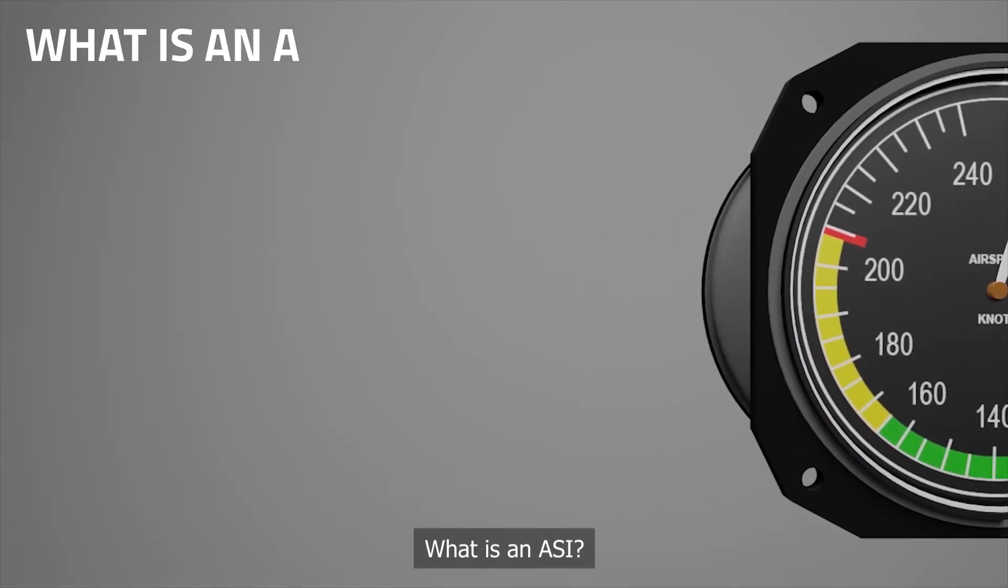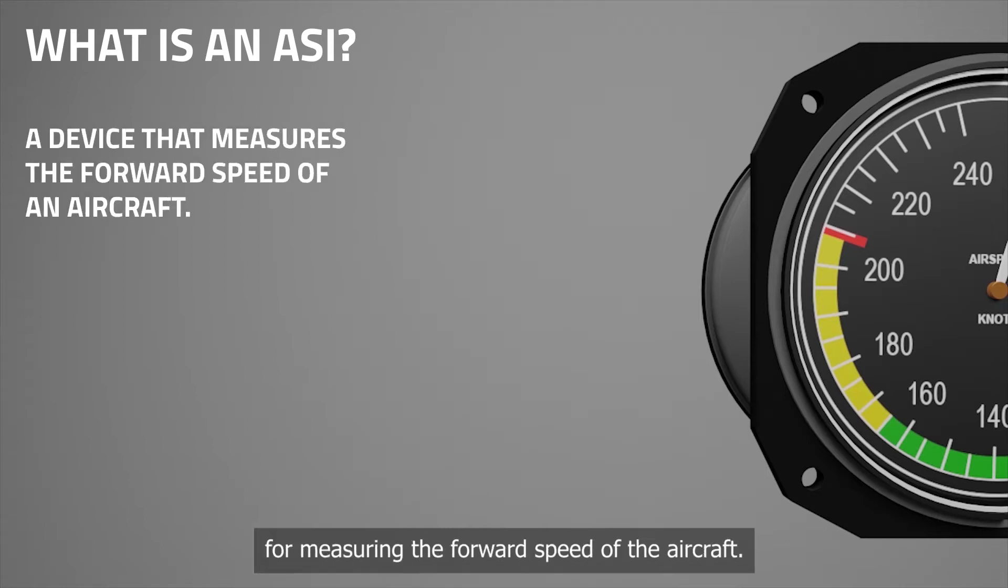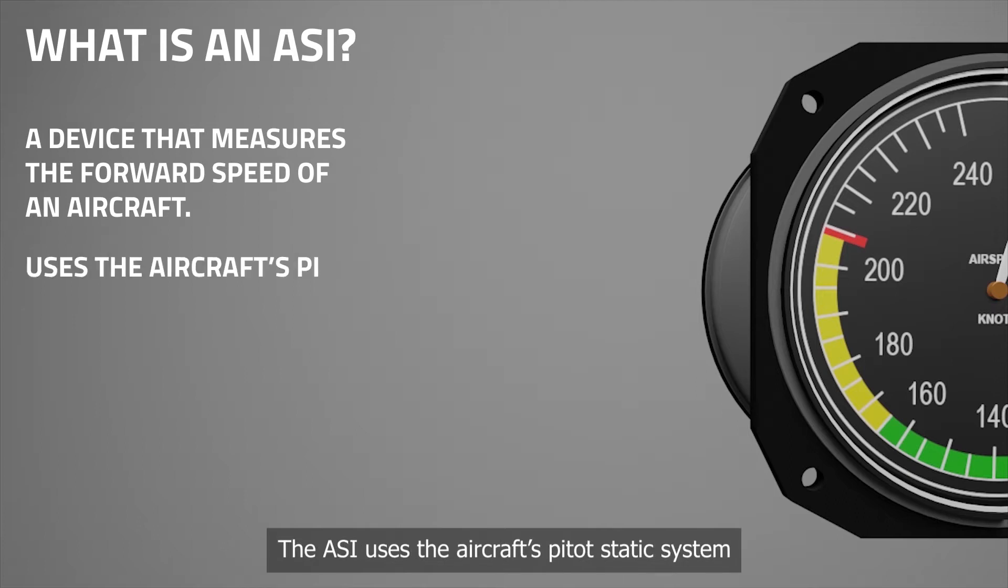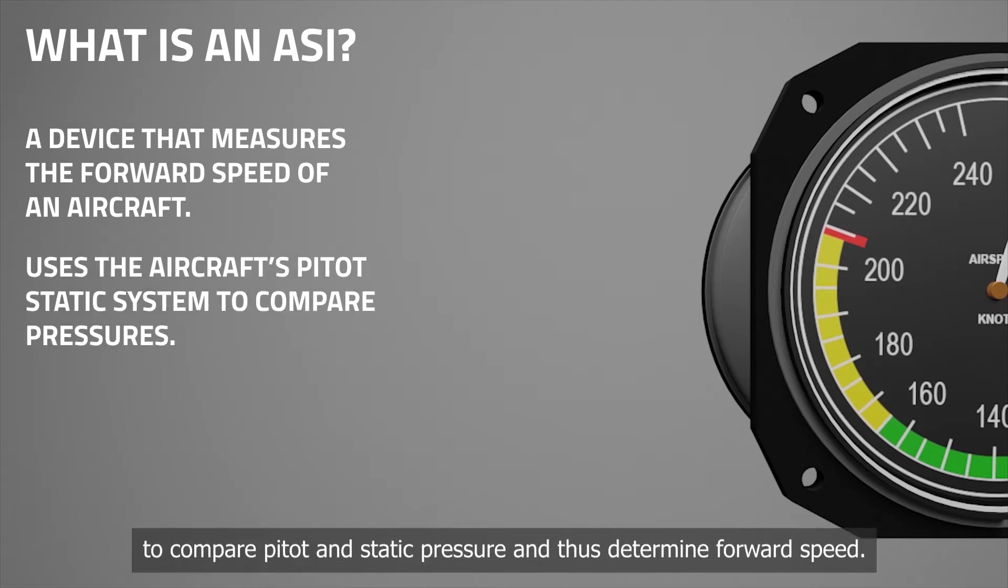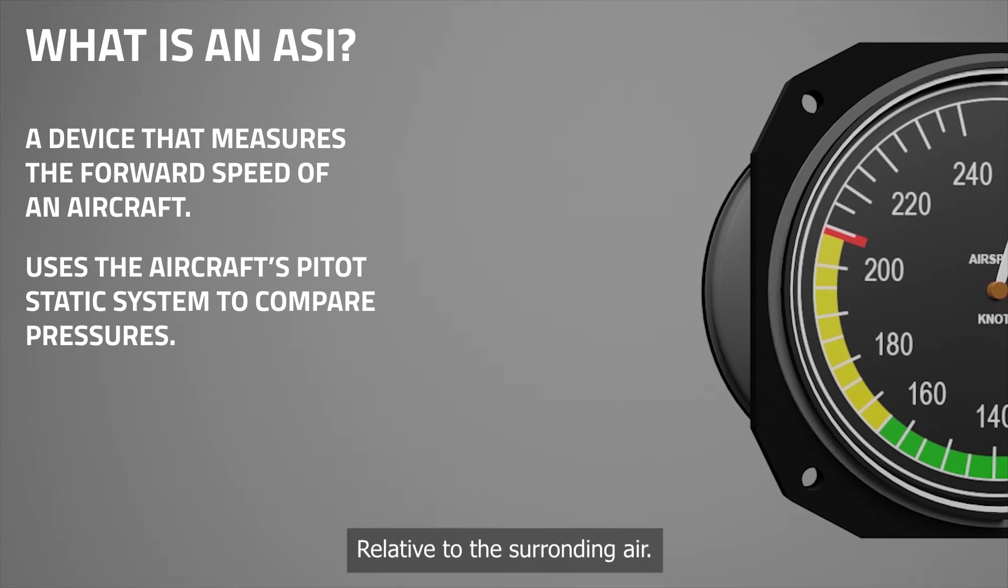What is an ASI? An ASI, or airspeed indicator, is a device for measuring the forward speed of the aircraft. The ASI uses the aircraft pitot static system to compare pitot and static pressure, and thus determine forward speed. It is an instrument that measures the airspeed of an aircraft relative to the surrounding air, using the differential between the pressure of still air and that moving air compressed by the craft's forward motion.